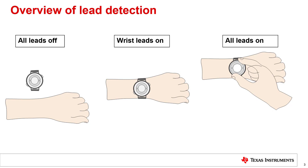As you can see from the illustrations, there are three possible conditions of connection to the electrodes. When the watch is off the wrist, none of the electrodes are in contact with the user — we call this the all-leads-off configuration. When the user wears the watch on the wrist, the bottom two electrodes make contact with the user — we call this the wrist-leads-on configuration. When the user touches the top electrode, all three electrodes make contact — we call this the all-leads-on configuration, in which the ECG signal can be acquired.